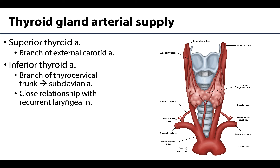The thyroid gland is highly vascularized by two main arteries. The first is the superior thyroid artery, which is typically the first branch of the external carotid artery. The inferior thyroid artery supplies the more inferior portions of the gland and is a branch of the thyrocervical trunk, which is off of the first part of the subclavian artery. We'll talk more about those divisions of the subclavian artery in the next session.